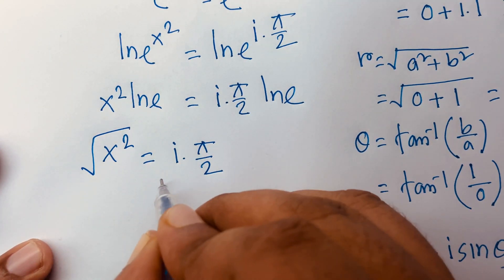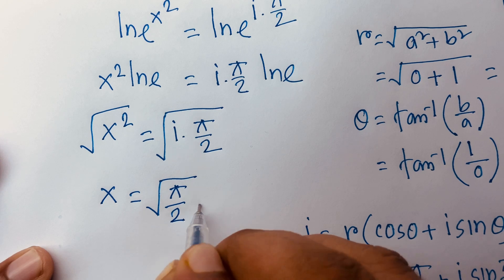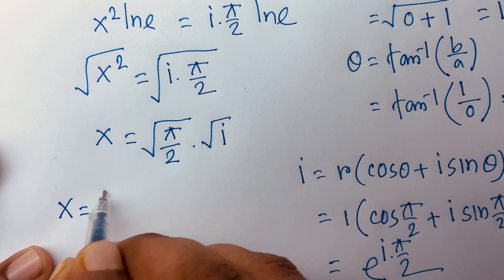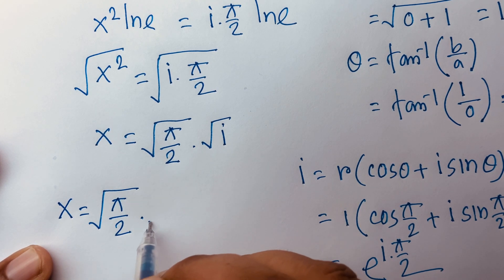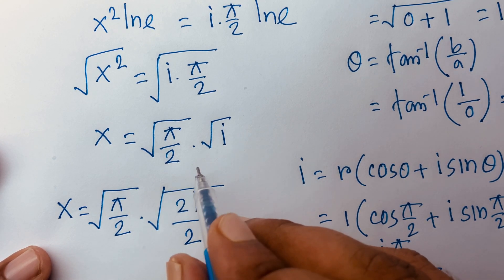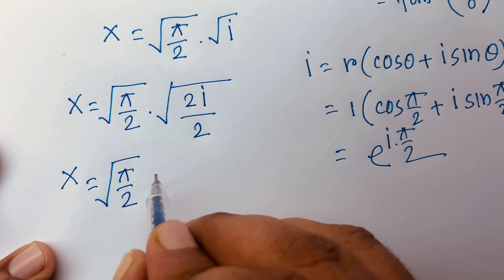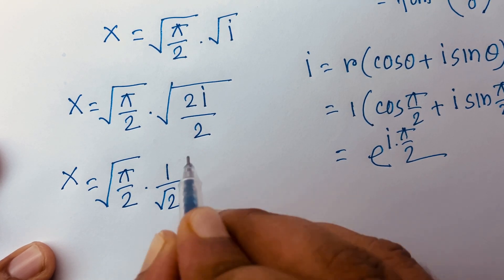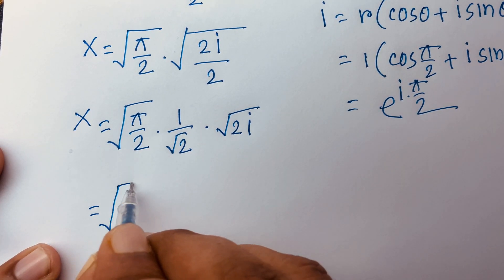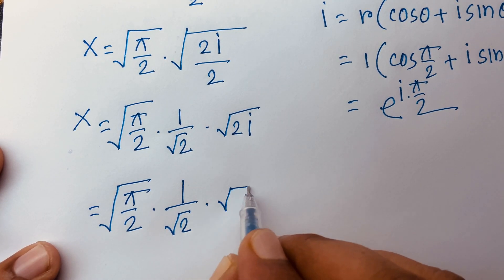Then if I use both side square root, I can say x is equal to square root of (pi over two) times square root of i. To simplify square root of i, I multiply by (2i over 2i) — multiply by two and i, then divide by two — so here is no change. I can say x is equal to square root of (pi over two) times one over square root two times square root of (2i).